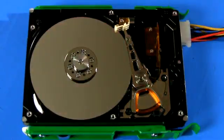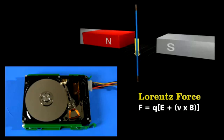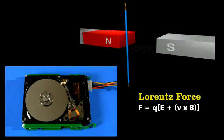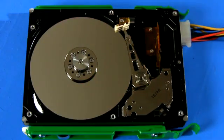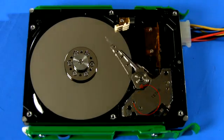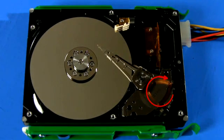The arm moves because of a Lorentz force. Pass a current through a wire that's in a magnetic field and the wire experiences a force. Reverse the current and the force also reverses. As current flows in one direction in the coil, the force created by the permanent magnet makes the arm move this way. Reverse the current and it moves back.